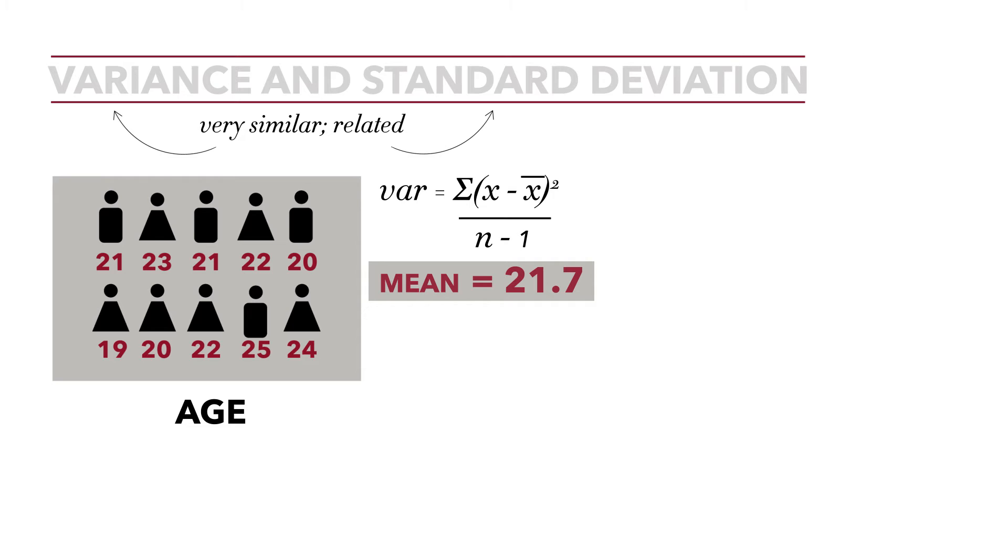With that information, we can continue computing the statistic. We take the first value, 21 minus the mean 21.7. Second value, 23 minus 21.7. Third value, 21 minus 21.7, then 22 minus 21.7, 20 minus 21.7, 19 minus 21.7, 20 minus 21.7, 22 minus 21.7, 25 minus 21.7, and 24 minus 21.7.